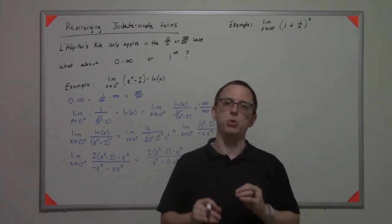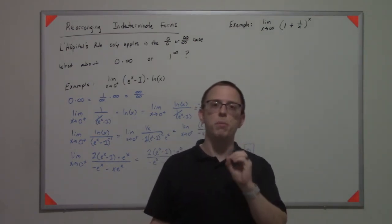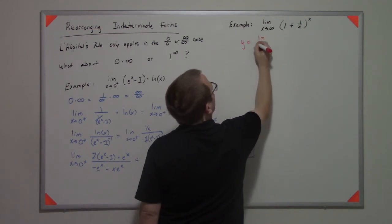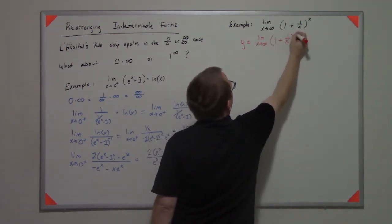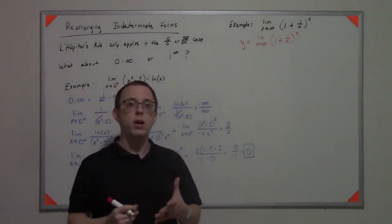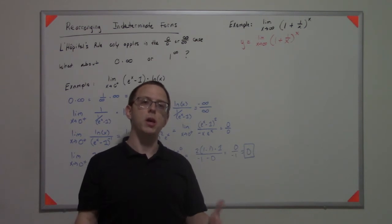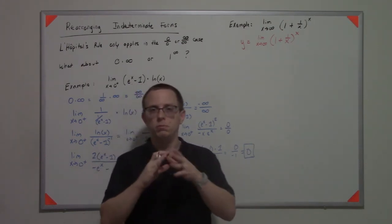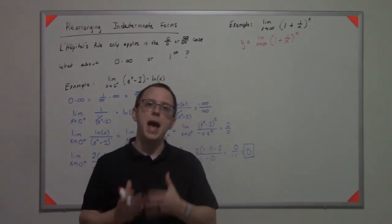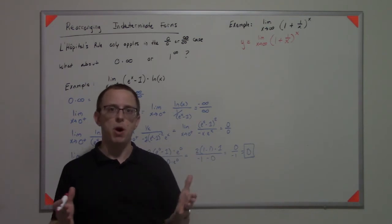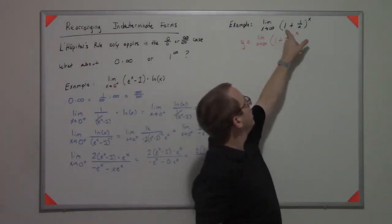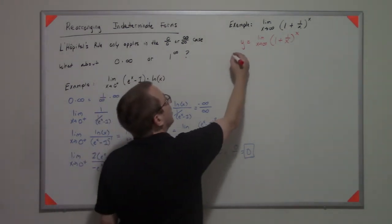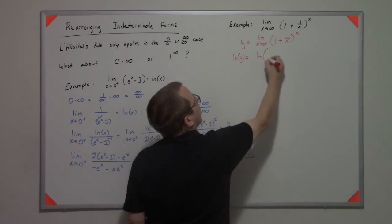We're going to assume that the limit is equal to some actual number and call that number y. This is quite an assumption — you're not really supposed to make such an assumption — but if it were false, we would prove it's false. Since we have a number, and it's got to be positive because there's no way a positive number raised to a positive power is going to be negative, we're going to apply the natural log to both sides: the natural log of y equals the natural log of this limit.